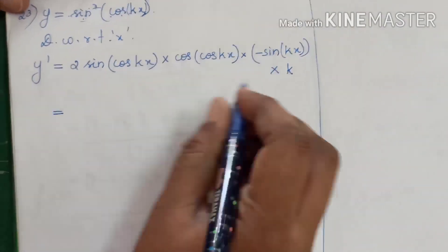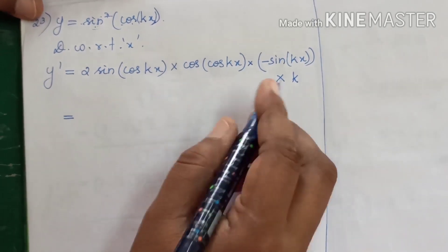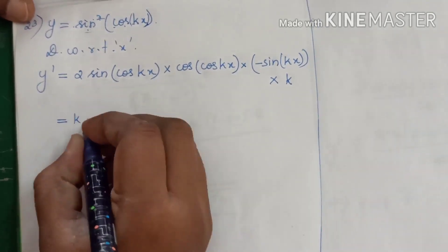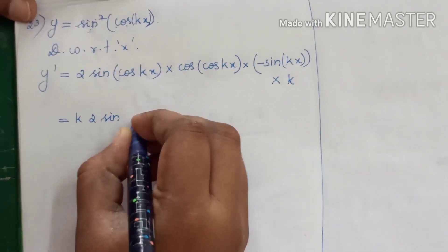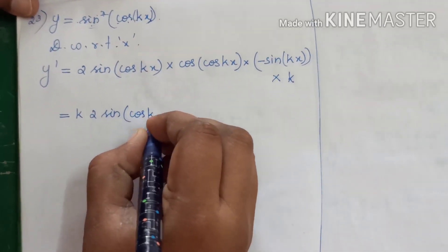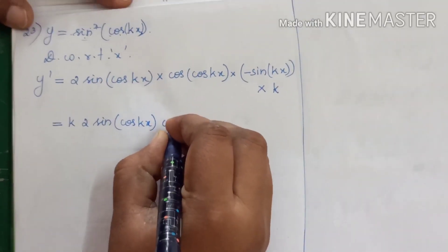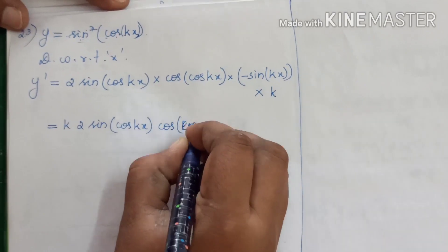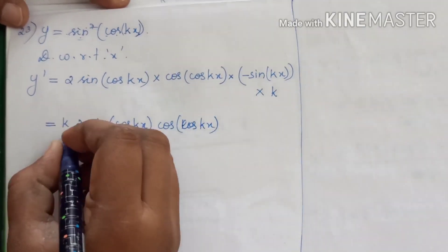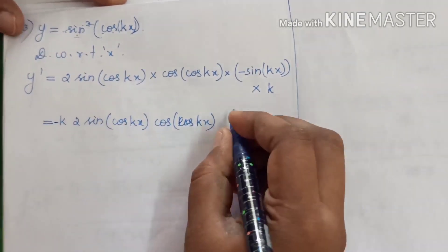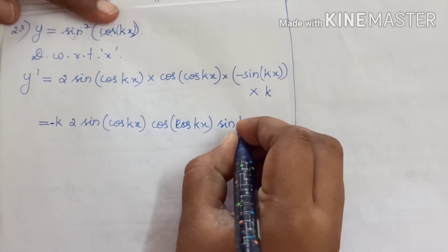So the differentiation of kx gives k. Which is equal to k into 2 sin of cos kx, into cos of cos kx. We can also bring in the minus sign here: minus sin of kx.